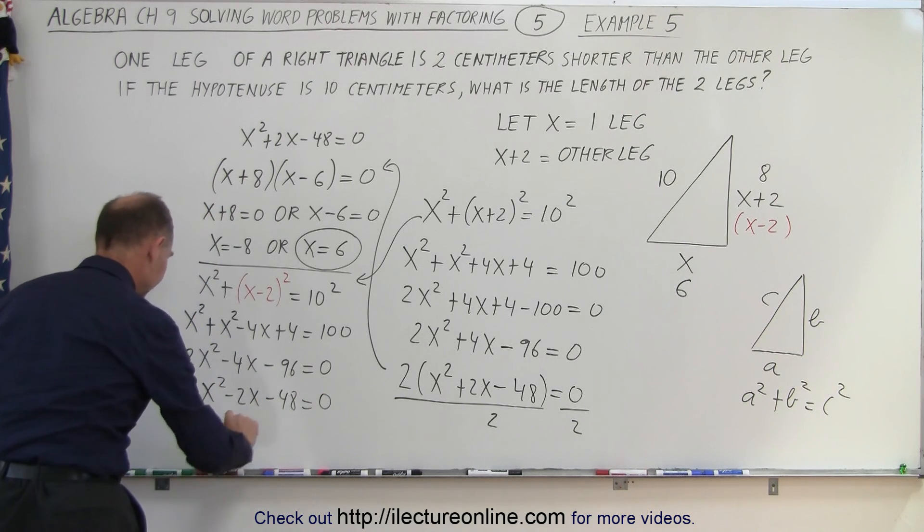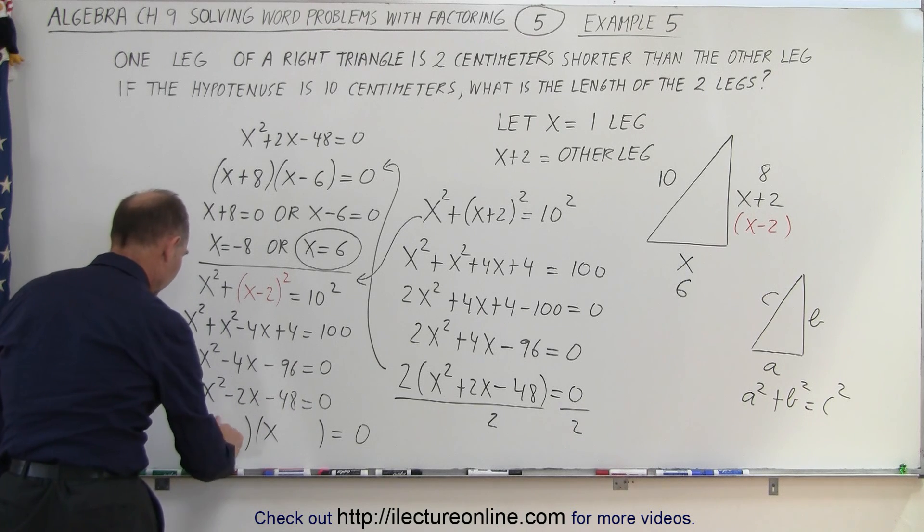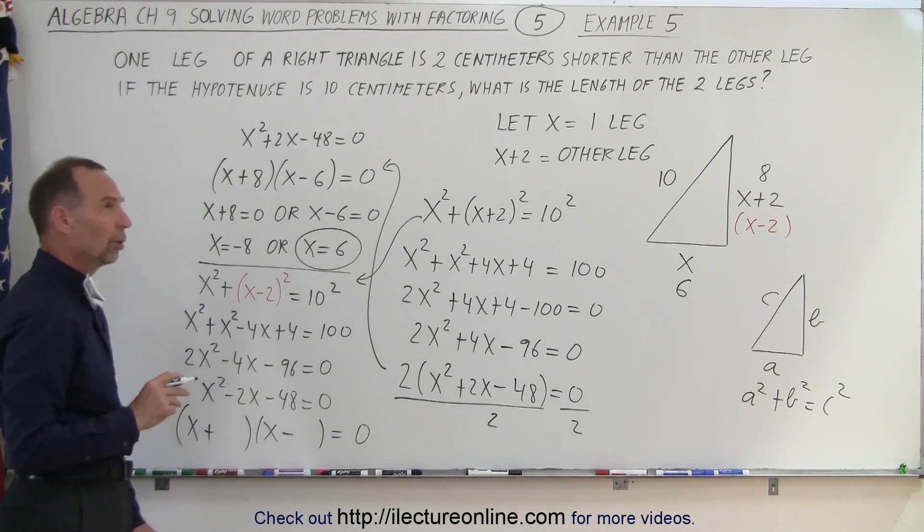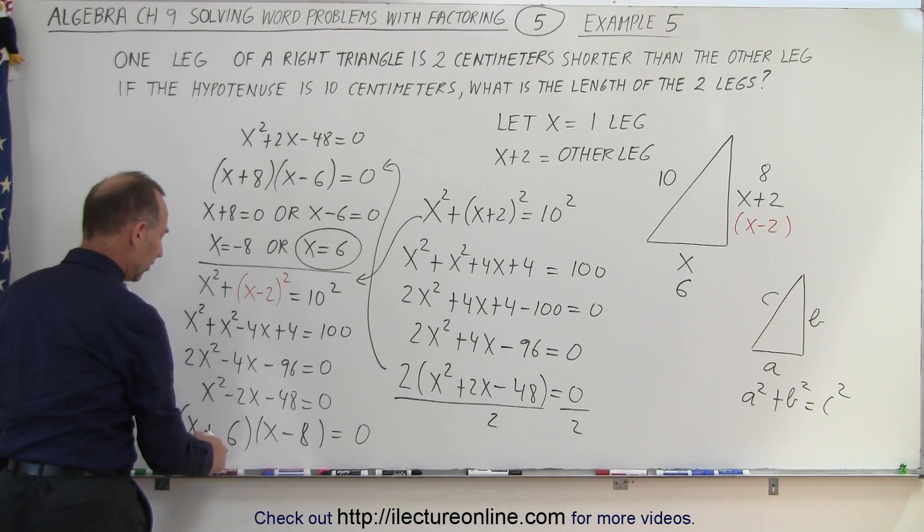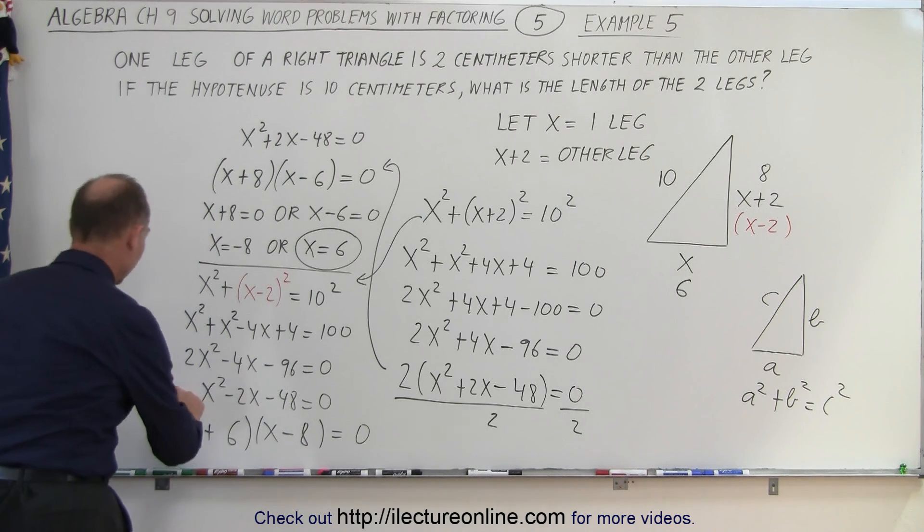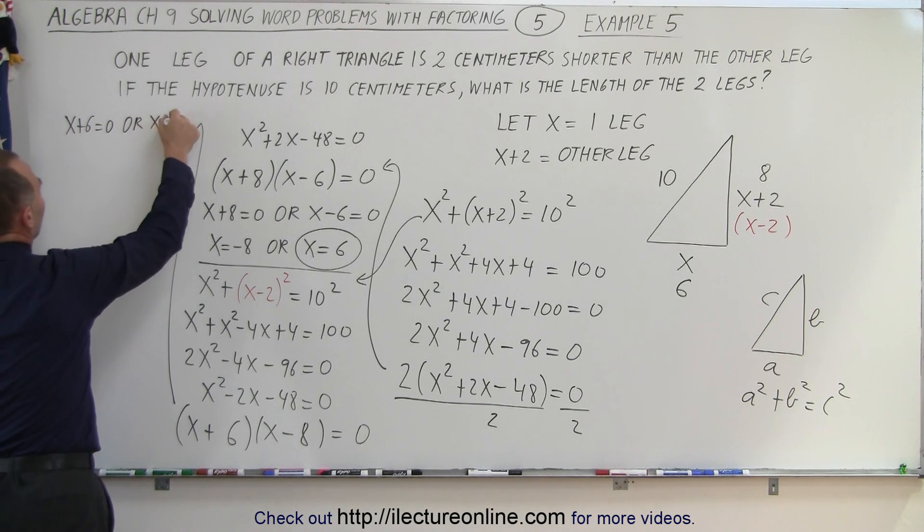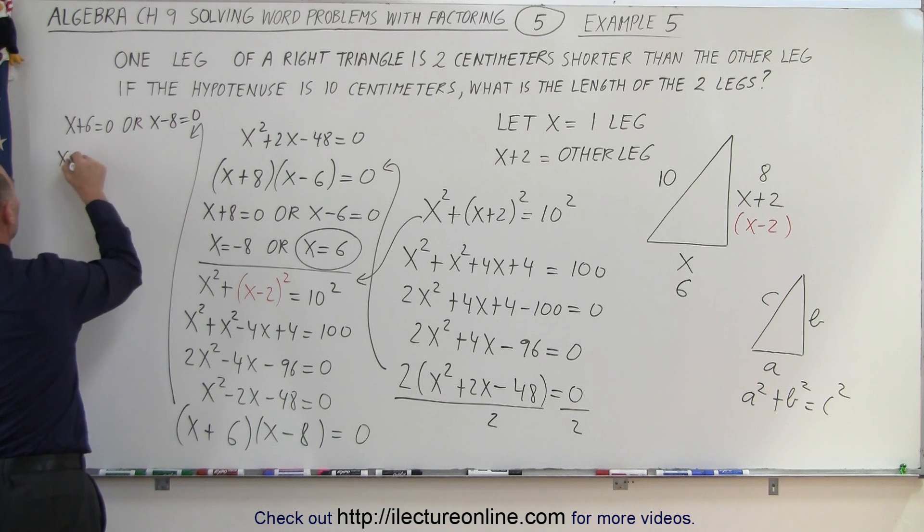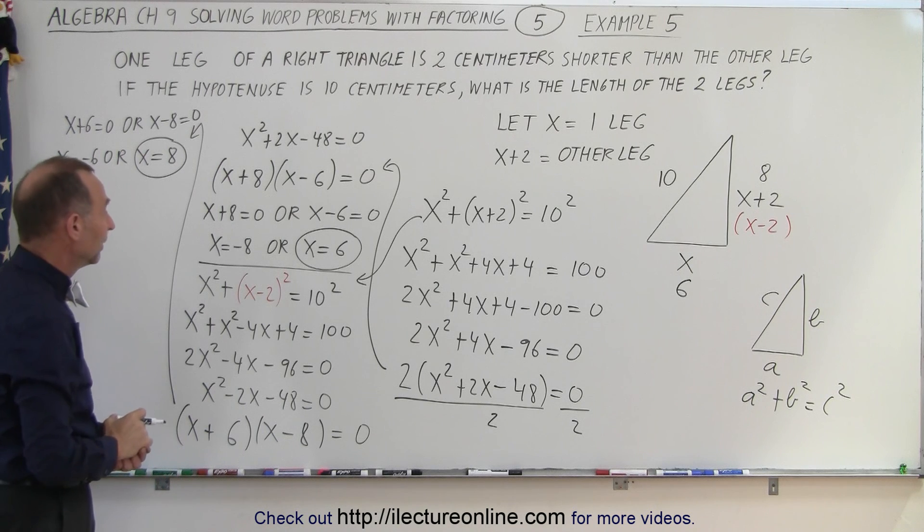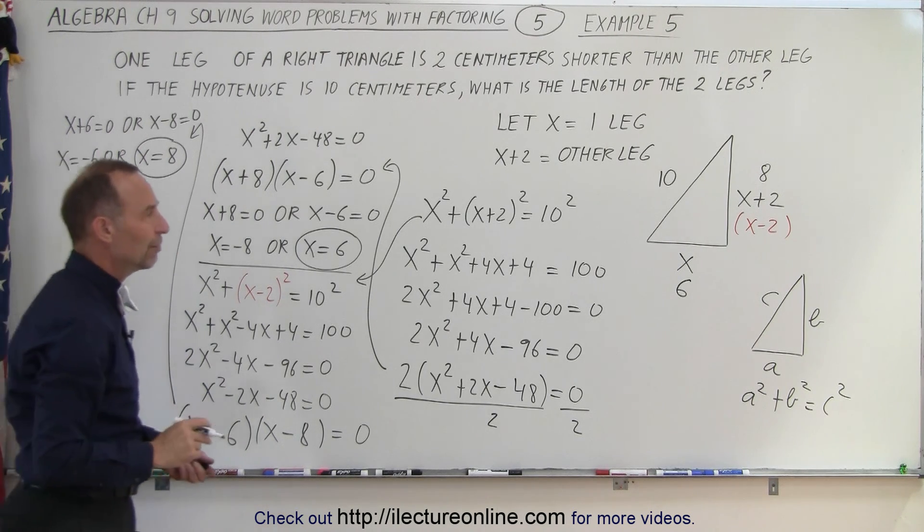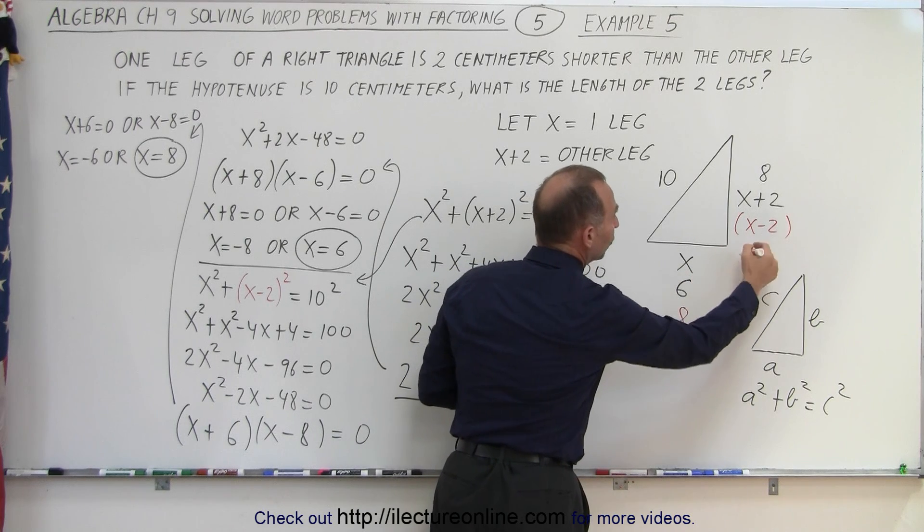Now let's go ahead and factor that and see what we get. So again we'll get an x and an x. Again we need a positive and a negative number, but now when we add them together we get a negative 2, which means the bigger of the two numbers must be negative. So a negative 8 and a positive 6 will do it because plus 6 minus 8 is minus 2, and 6 times minus 8 is minus 48. So in this case, continuing over here, we then know that either x plus 6 equals zero or x minus 8 equals zero, which means that x equals negative 6 or x equals positive 8. And again, only the positive 8 can be the proper solution because we can't have negative lengths. So if we then let x equal 8, that means this side is 8, and this side will be 8 minus 2 or 6.